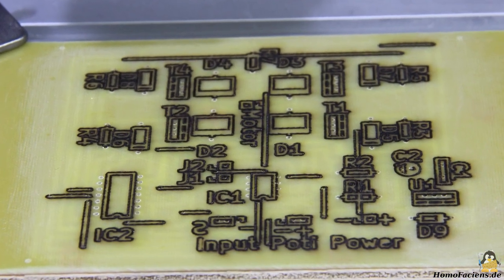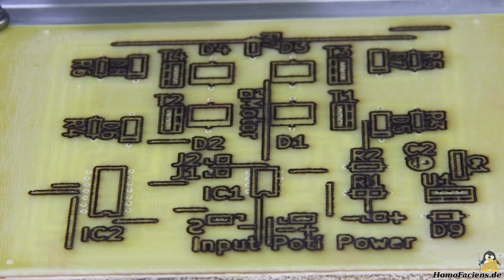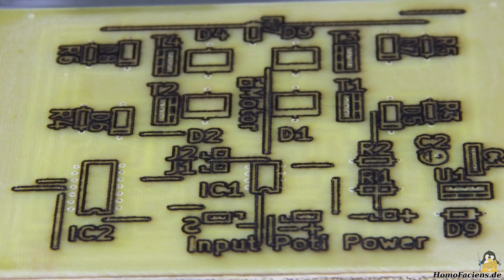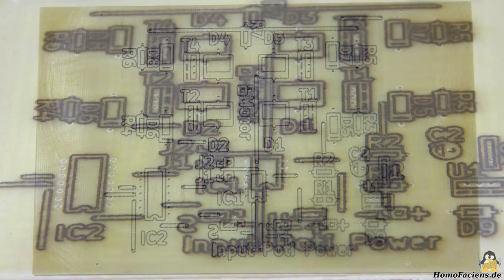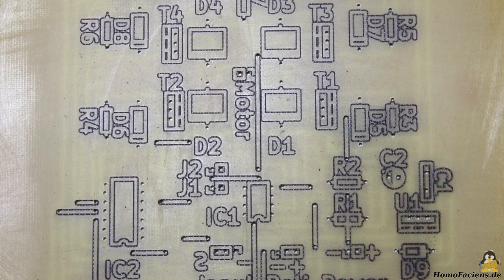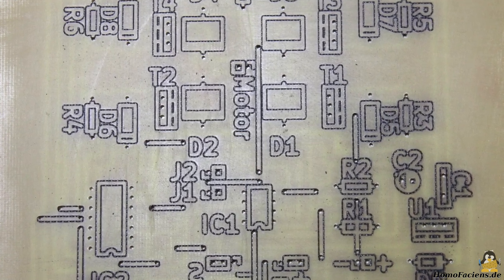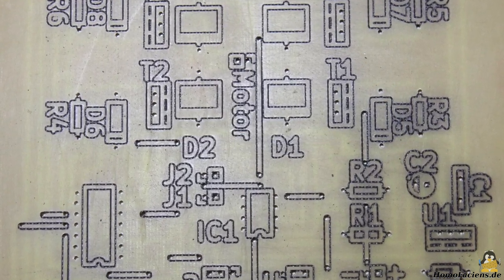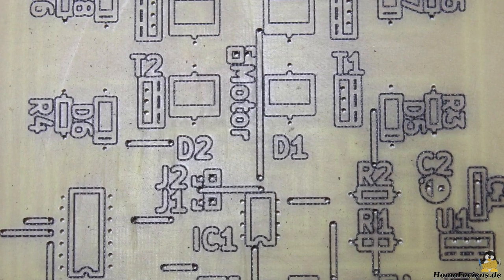The smoke traces around the lasered lines make the result not look that good. But after they have been removed with sandpaper the lettering can be clearly read, the circuit board is finished and I am completely satisfied with this first result.